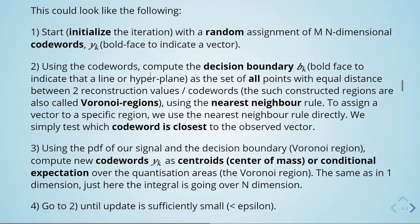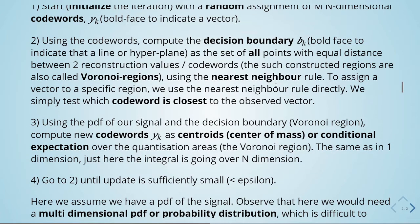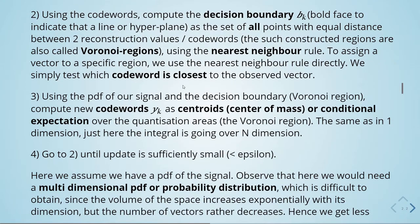The next step is using the PDF of our signal and the decision boundary — the Voronoi region. We compute new code words as centroids, or center of mass, which is the conditional expectation over the quantization areas — the Voronoi regions. This is the same as in the one-dimensional case, but here the integral goes over n dimensions. Then we repeat: we go back to step two and repeat until the change is sufficiently small — smaller than a defined epsilon.